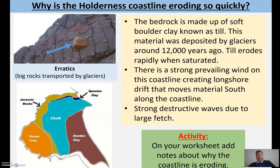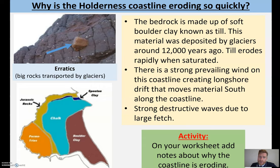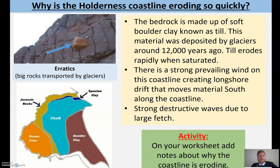The other reason why this coastline erodes so quickly is that it has a very strong prevailing wind. Prevailing wind is the direction of wind it gets most often, and this really strong prevailing wind creates longshore drift that moves material south along the coastline. There's a lot of longshore drift moving material and moving the beach south along the coastline, so it doesn't end up with a beach to actually defend it. Remember, the best natural defence against coastal erosion is a natural beach.